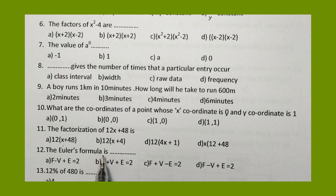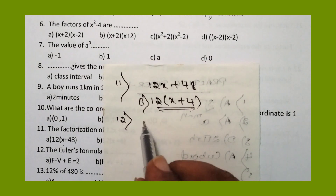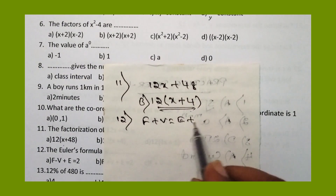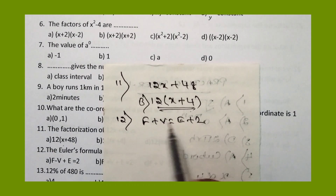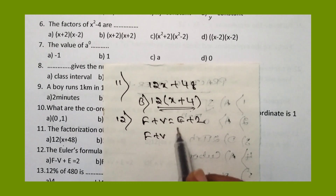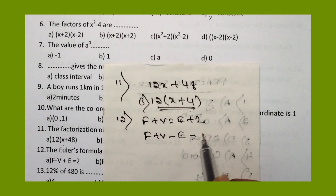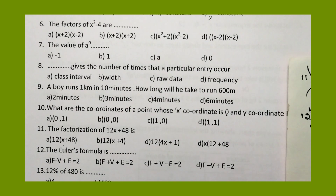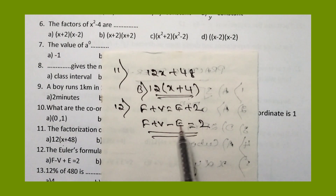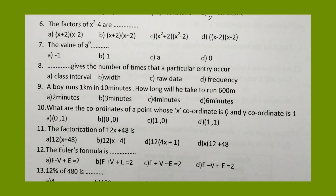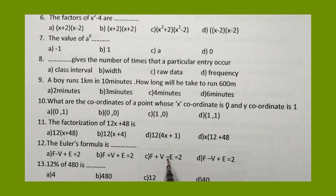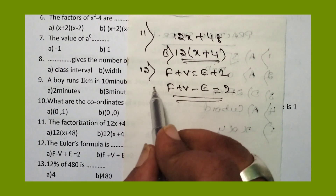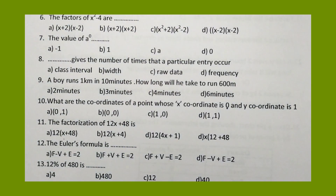Let us move to the twelfth question: Euler's formula. Euler's formula is F plus V equals E plus 2, where F is faces, V is vertices, and E is edges. Rearranging: F plus V minus E equals 2. Option C, F plus V minus E equals 2, is the right answer for the twelfth question.